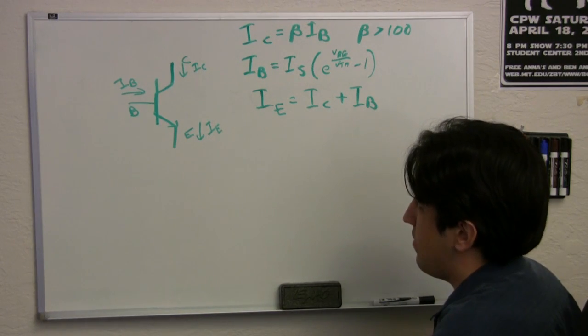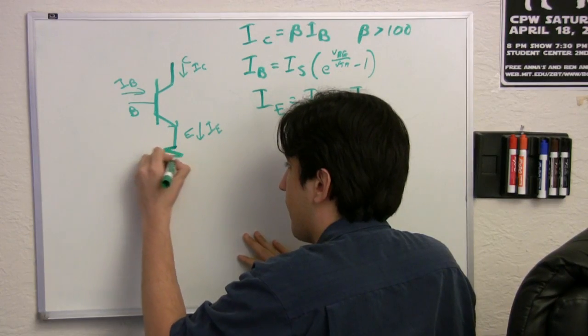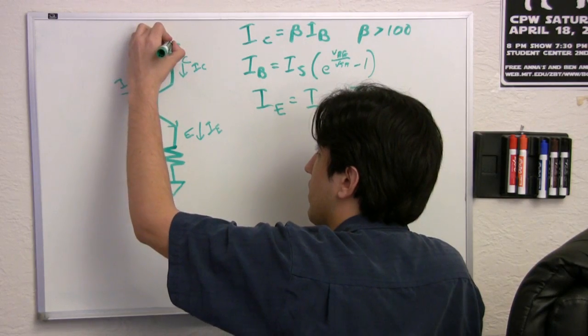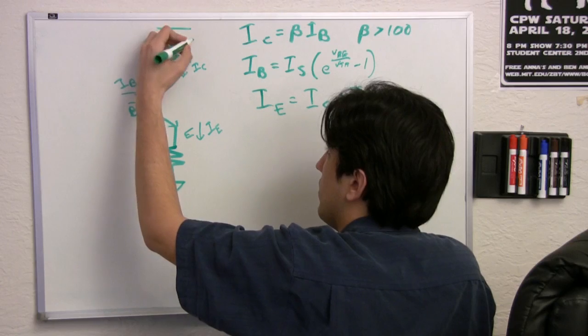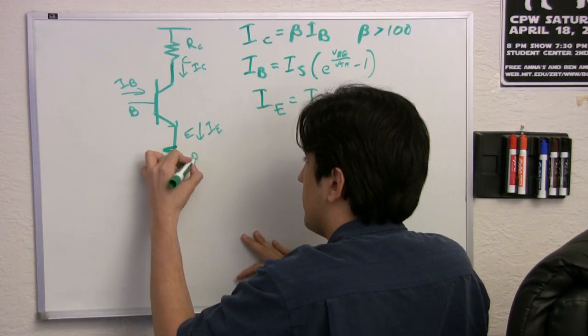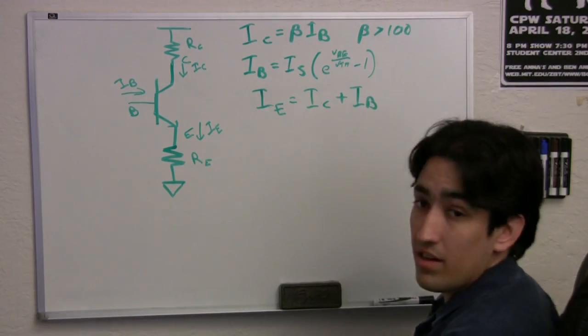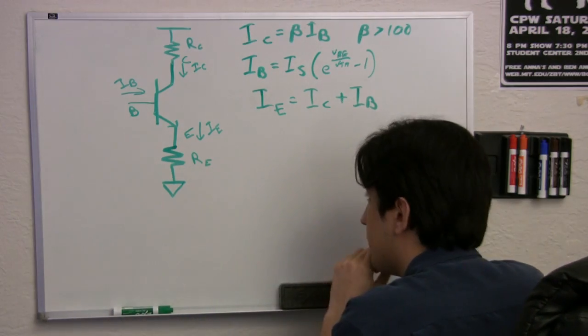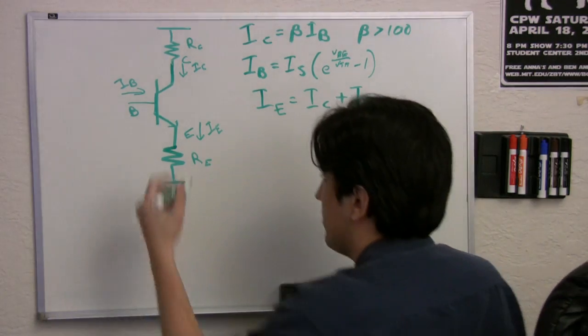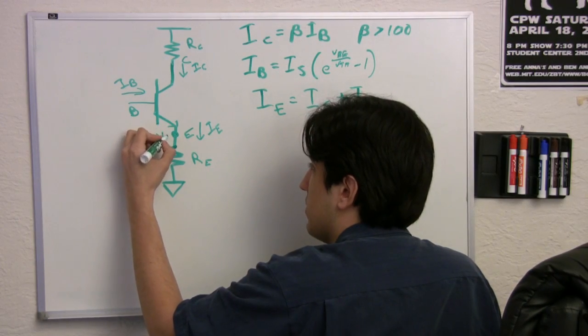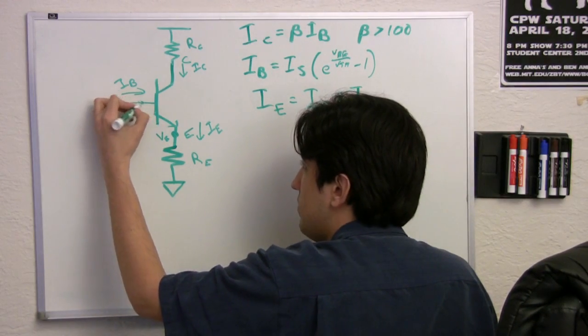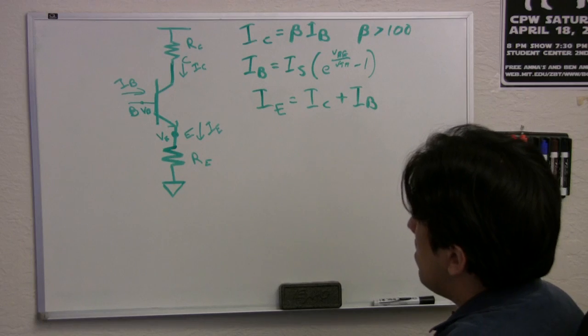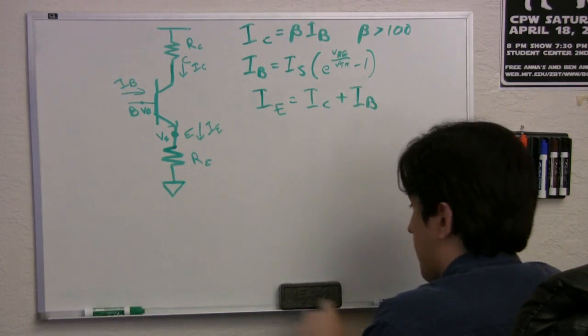In order to do that, I'm going to add some resistors. I'm going to add two resistors to our circuit, and I'm going to call this RC, and I'm going to call this RE. Now, we added these resistors so we have control over what the resistances are. We're going to also define two nodes. I'm going to call this voltage, VE, the voltage at the emitter, and this voltage, VB, the voltage at the base.